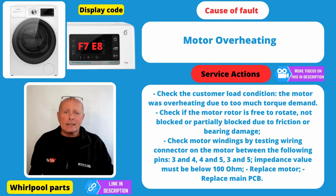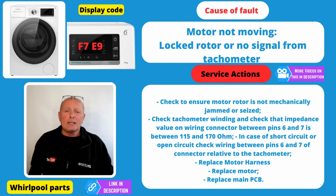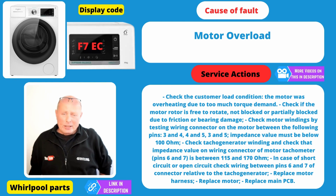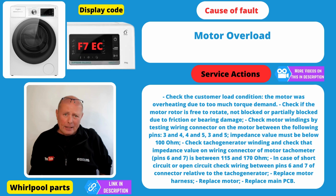Error Code F7E8 is indicating that the motor is overheating. This could be because of an overloaded drum. Just follow the steps on the screen. Error Code F7E9 is indicating that the motor is not moving or there is a motor fault. I'd suggest you bench test the motor separately off the machine to give you an idea if the motor is good. Error Code F7E8 also references one of the fields of the motor being disconnected, as it's a three-phase motor — do a test on the three phases and make sure the wires are in good condition. Error Code F7EC is indicating motor overload — check that you're not overloading the machine and follow the checks for testing the motor.